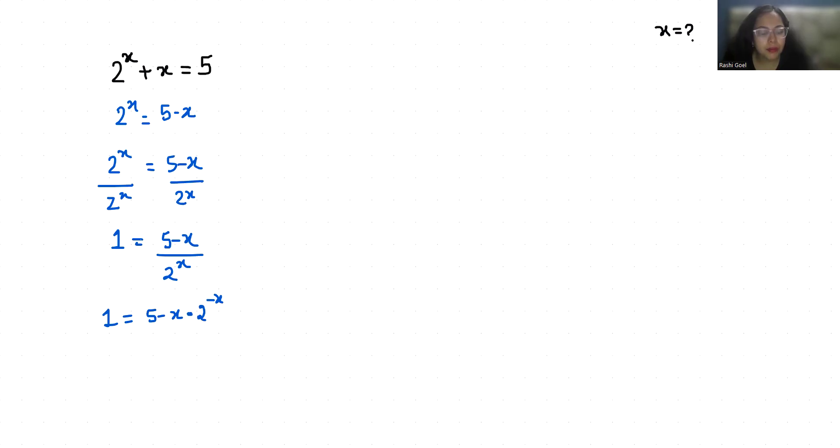Now, I am going to multiply both sides by 2^5. 2^5 is 32, so we get 32 equals (5 - x) times 2^(5-x).